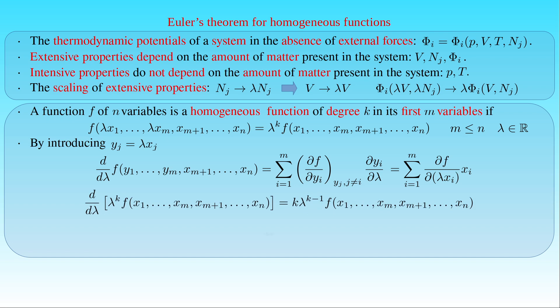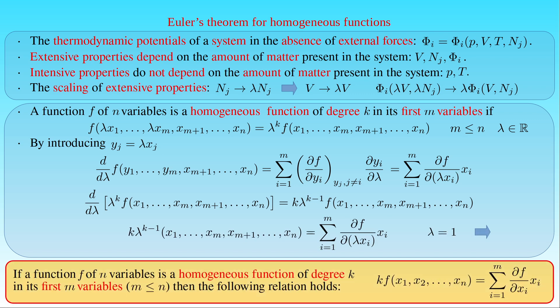By inserting these two equations into the derivative of the definition of the homogeneous function f and setting the arbitrary parameter λ to 1, we obtain Euler's theorem for homogeneous functions. It states that if a function f of n variables is a homogeneous function of degree k in its first m variables, then k times f is equal to the sum of the partial derivative of f with respect to xᵢ times xᵢ from i equals 1 to m. Since the thermodynamic potentials are homogeneous functions of degree 1, Euler's theorem for k equals 1 can be applied to them.